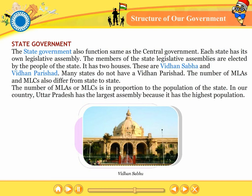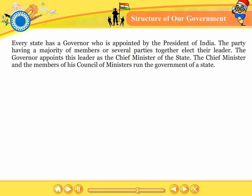In our country, Uttar Pradesh has the largest assembly because it has the highest population. Every state has a governor who is appointed by the president of India. The party having a majority of members, or several parties together, elect their leader. The governor appoints this leader as the chief minister of the state. The chief minister and the members of his council of ministers run the government of a state.